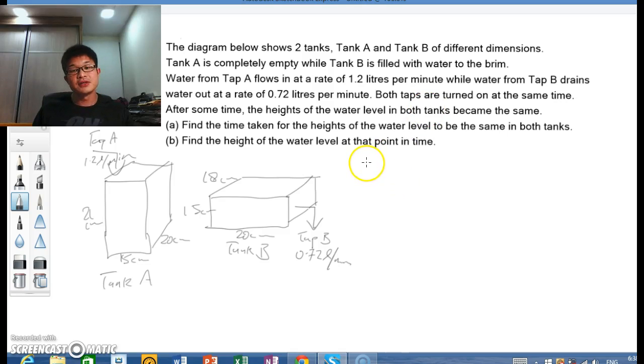So let's try to solve it. When we look at tank A first, we know that water is going in, so there is an increase in height. The increase in height per minute is 1,200 divided by the base area of 15 times 20, which gives you 300. So it increases 4 cm per minute.